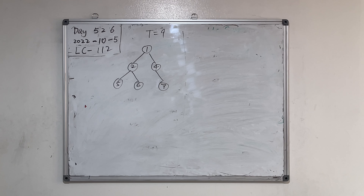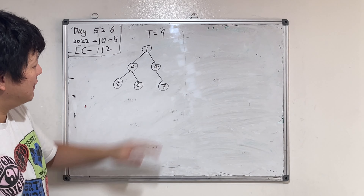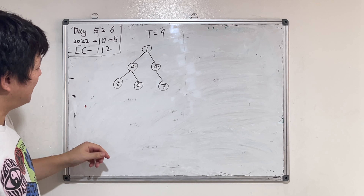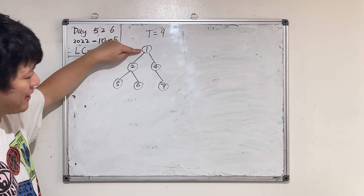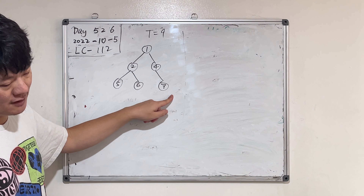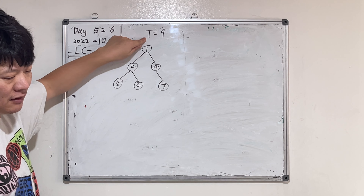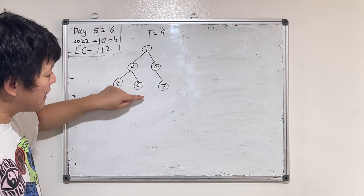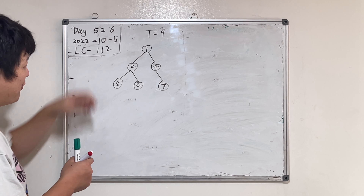Hello Ryan! Look at this binary tree — we're also given a target. Can you find the path from the root to the leaf where the sum of the nodes equals the target? The leaf nodes are those without any kids; the root has no parent. Each node has at most two kids. We're given target T equals 9 — can you find a path from root to leaves where the sum equals the target?